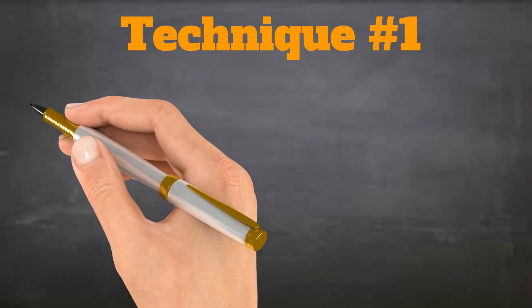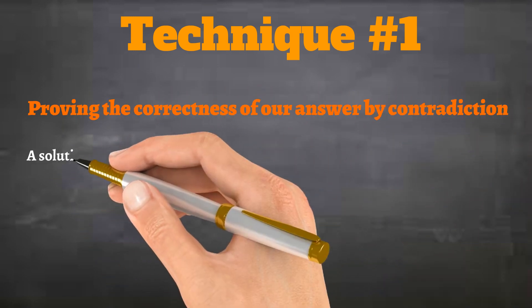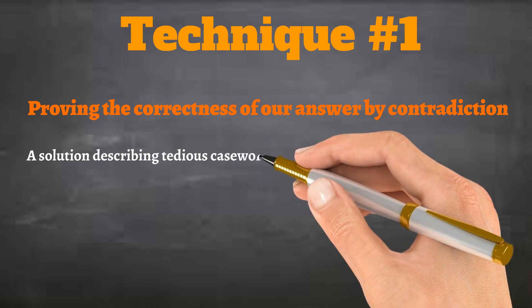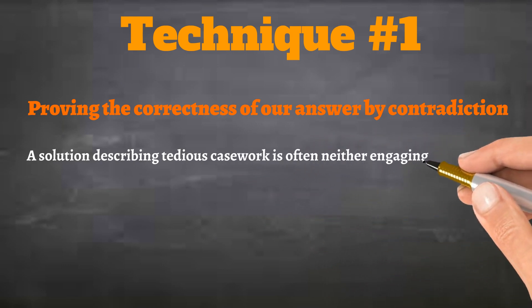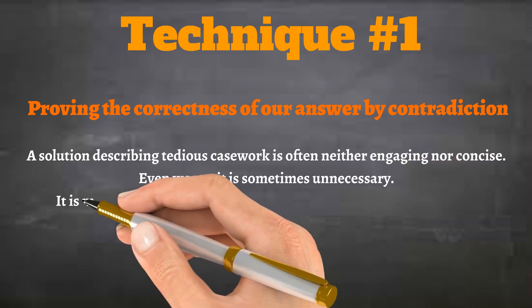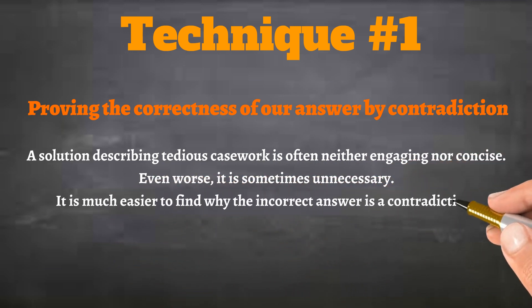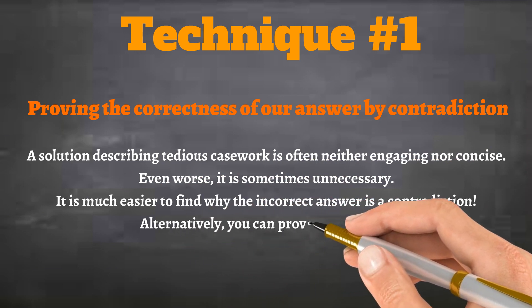Technique number one, proving the correctness of our answer by contradiction. A solution describing tedious casework is often neither engaging nor concise. Even worse, it is sometimes unnecessary. It is much easier to find why the incorrect answer is a contradiction. You can also prove why making your answer incorrect will be a contradiction.